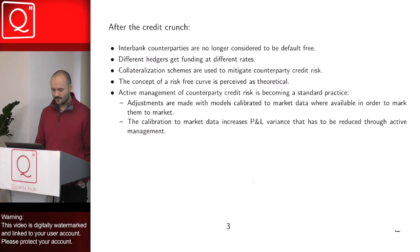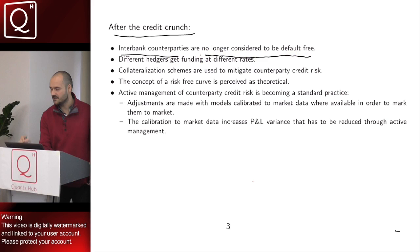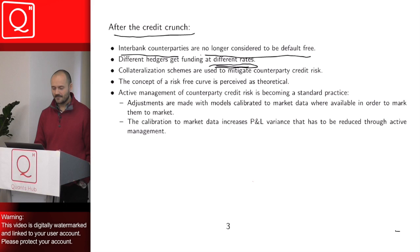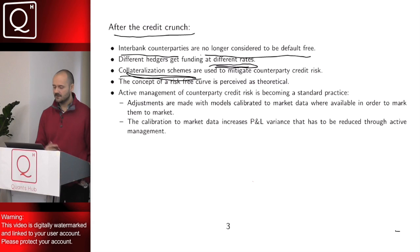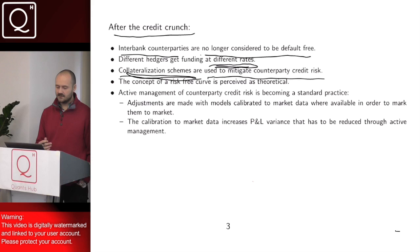After the credit crunch, the situation changed dramatically. After the default of Lehman, interbank counterparties are no longer considered to be default-free. Different banks get funding at different rates — Deutsche Bank does not get funding at the same rate as, for example, BBVA. Collateralization schemes, although they were always in place, are being enforced by regulators and used to mitigate counterparty credit risk. Nowadays, essentially every deal between interbank counterparties is collateralized.